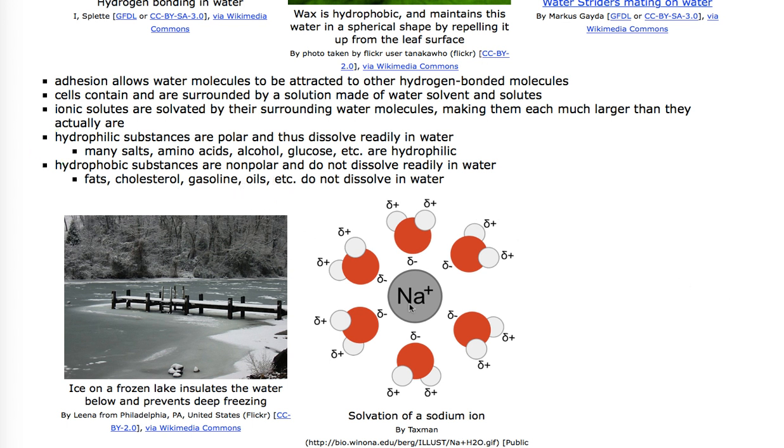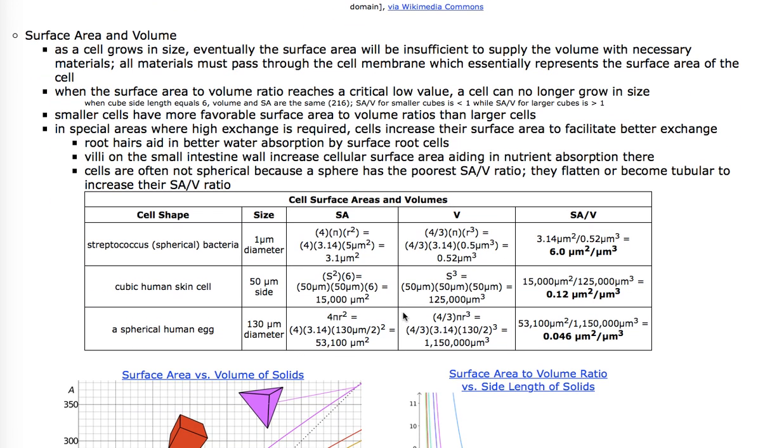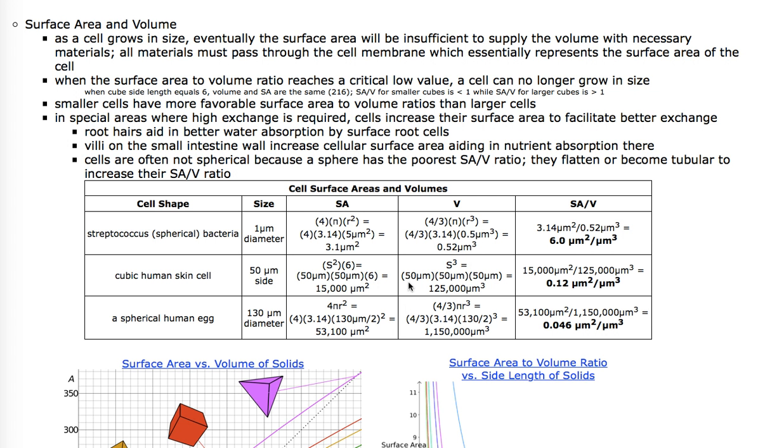Now next we have to talk briefly about surface area and volume. Cell size is critically controlled by its surface area. As the cell grows in size, eventually the surface area will not be sufficient to supply the volume inside with the necessary materials and energy.